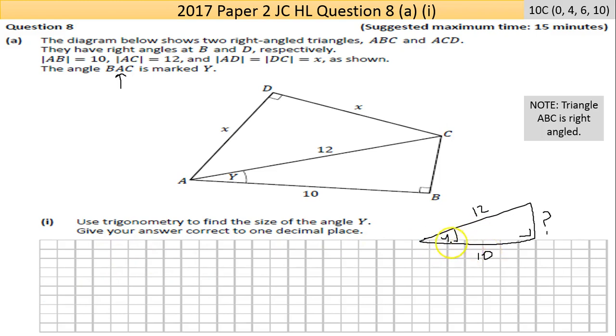If I label my triangle, if that's the angle Y I'm looking at, then this becomes the opposite, and the 10 here becomes the adjacent, and I would create the hypotenuse.